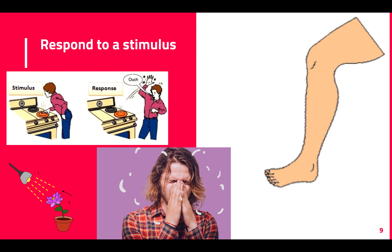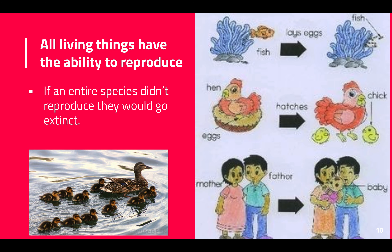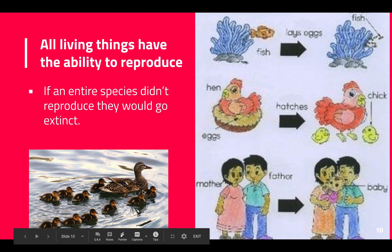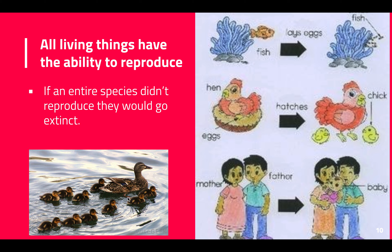All living things have the ability to reproduce. If an entire species didn't reproduce, they would go extinct. When I say all living things have the ability to reproduce, I don't mean each individual will reproduce — I mean the species has the ability. All humans as a species have the ability to reproduce, but that doesn't mean each human will. If no human reproduced, the human species would go extinct.